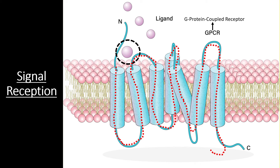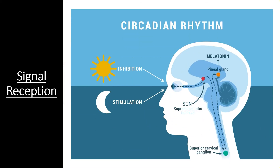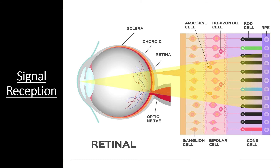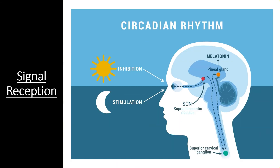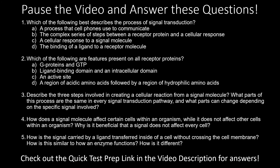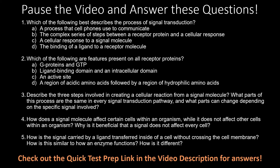If we think about signal reception in terms of our model system, the circadian rhythm, we can see that there are many signal reception events in this one system. The eyes start the process by receiving photons from light that serve as a signal; the photons hit rhodopsin receptor proteins in the rod cells, which start a signal transduction pathway. However, there are many more signal reception events in this system — each nerve cell in the brain receives a neurotransmitter signal, and melatonin, the hormone ultimately released by the pineal gland, is the ligand responsible for transferring the signal throughout the body. Now let's see if you were paying attention — pause the video and take the short quiz; you can find answers through the quick test prep link in this video's description.